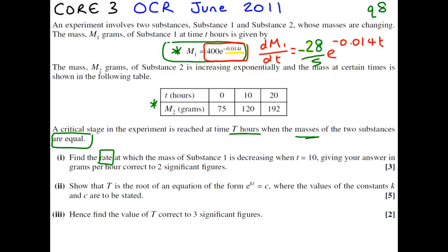Now it wants to know when t equals 10. When t is 10, we're going to put the number 10 into this expression. On your calculator, type in minus 28 over 5 times e to the power of minus 0.014 times 10. That is minus 4.9 grams per hour.